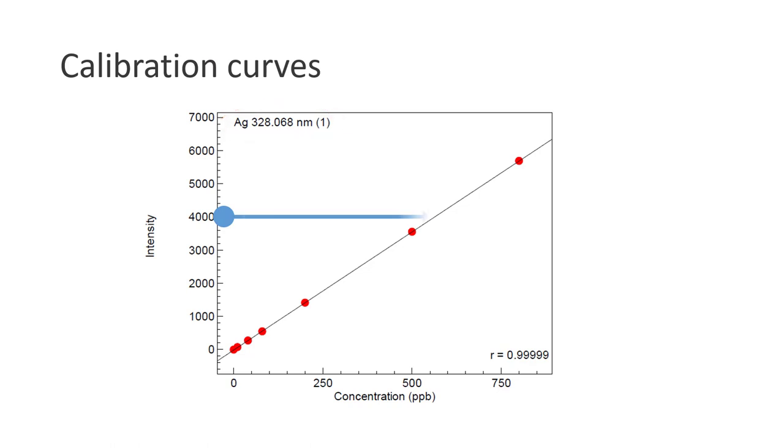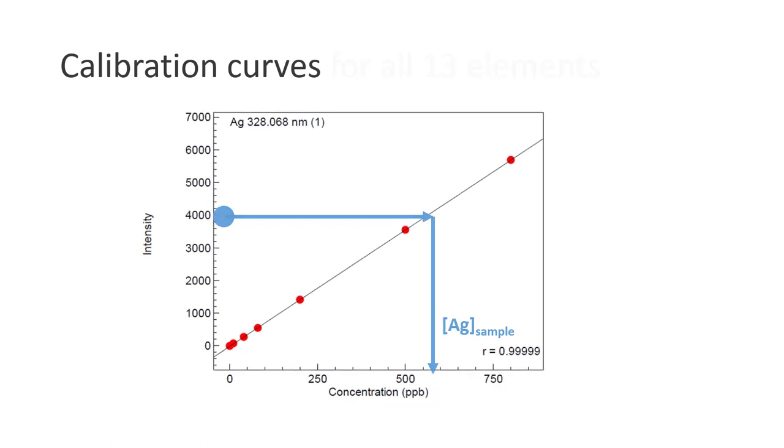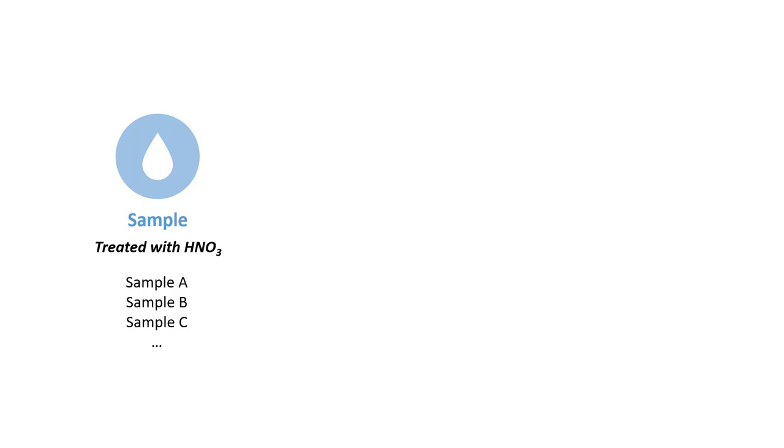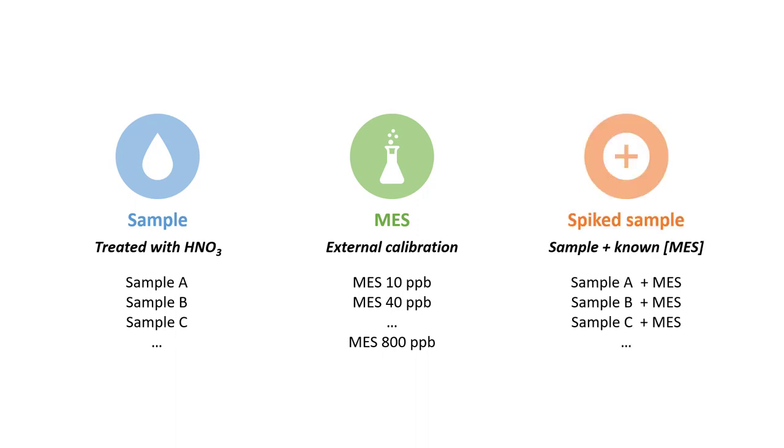For example, in this case of silver, if the emission intensity obtained at 328 nanometers is 4000 units, using the calibration curve we can back-calculate the concentration of silver present in the unknown sample. In this experiment we'll use the calibration curves of all 13 elements of interest. Don't worry about it, the software will help us plot these calibration curves automatically.